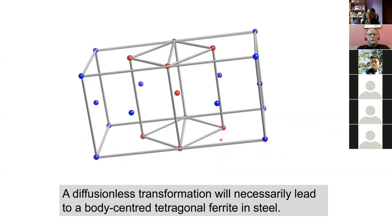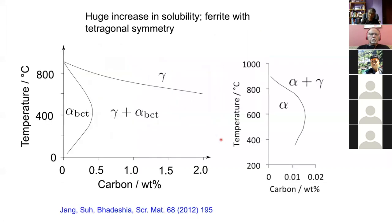There is no phase diagram for tetragonal ferrite and austenite equilibrium. To cope, we must create data for the tetragonal form using first-principles calculations. You set up a tetragonal unit cell, work out its cohesive energy, and compare with the cubic cell, giving a term you can substitute into phase diagram calculations. The result is an iron-carbon phase diagram between body-centered tetragonal ferrite and austenite, and you can see that the solubility has increased dramatically compared to the cubic ferrite equilibrium.